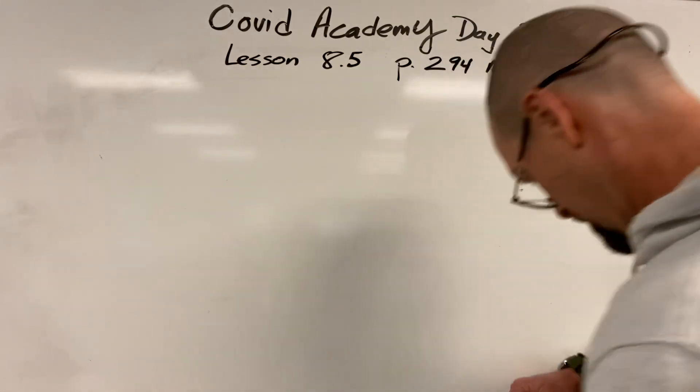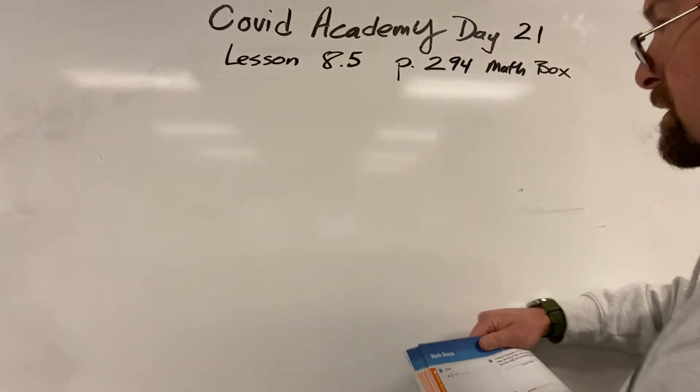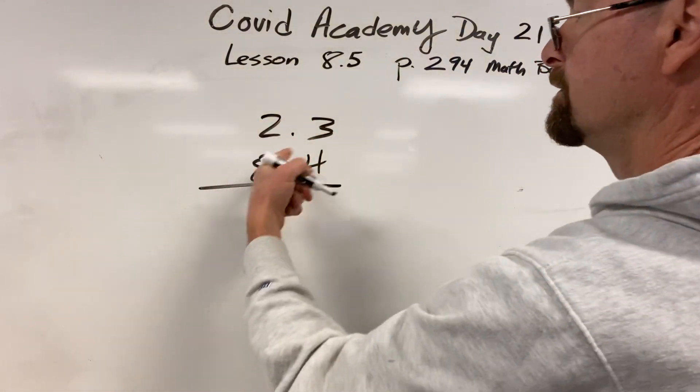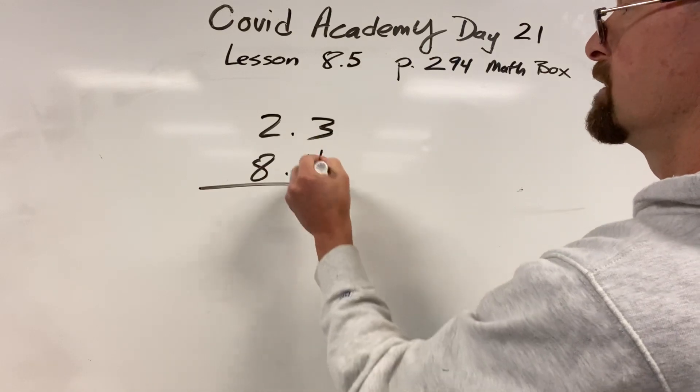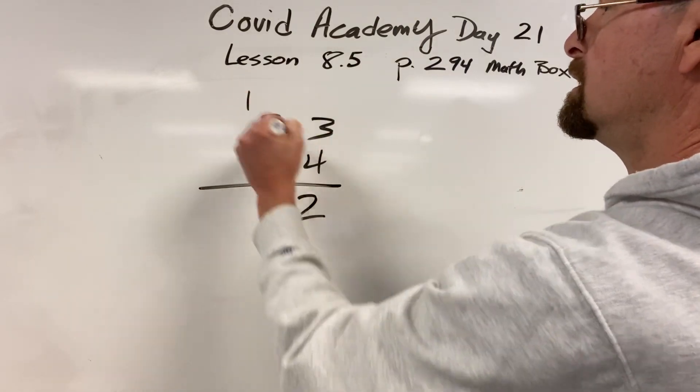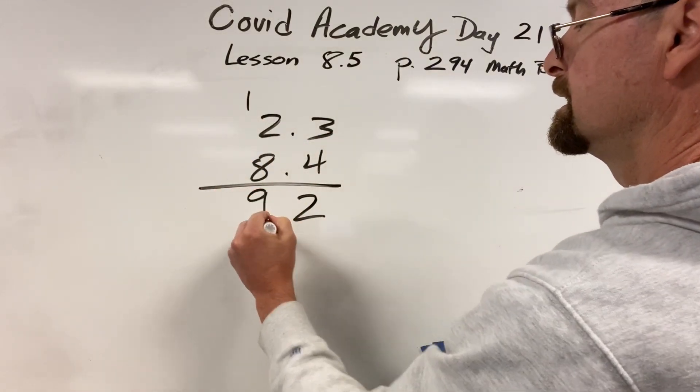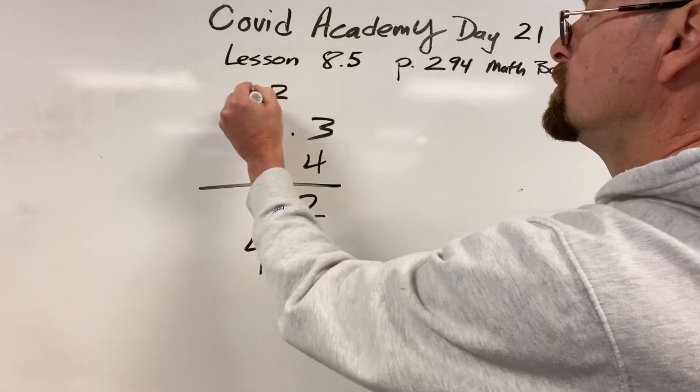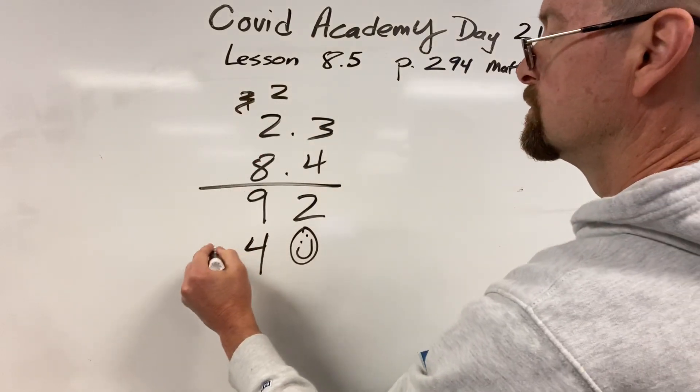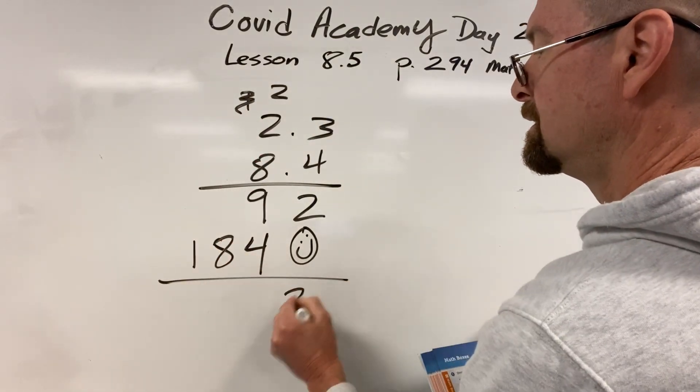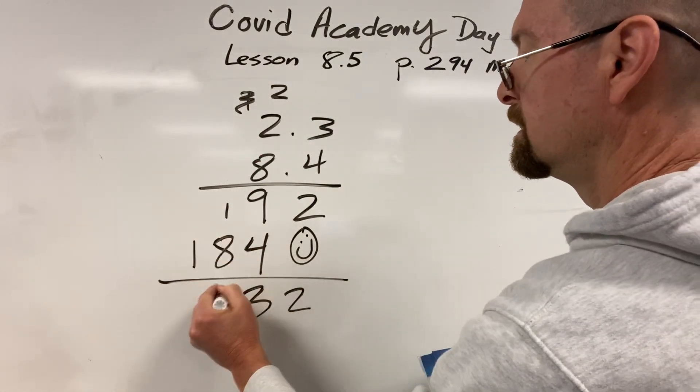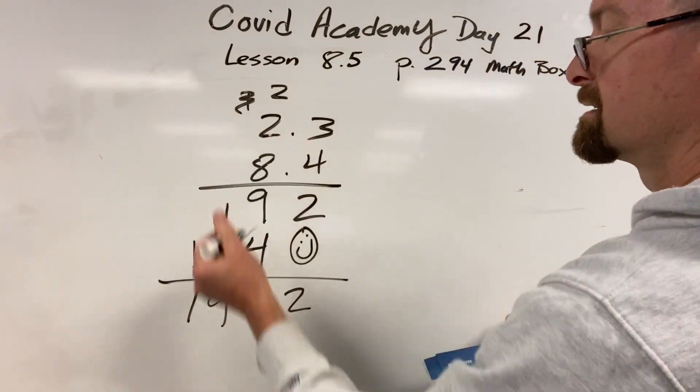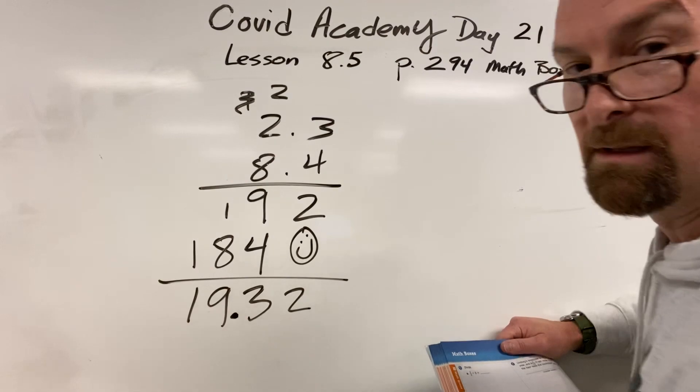We're moving on to the number 4. Multiply. 2.3 times 8.4. Doesn't matter if the decimals are lined up. You ignore them now. 4 times 3 is 12. 4 times 2 is 8. One more is 9. Yay! I love math. 8 times 3 is 24. Carry the 2. 8 times 2 is 16. Two more is 18. 2, 3, 9, 1. I know it's 8 times 2 is 16. That means my decimals got to go about there.